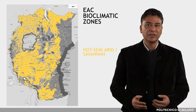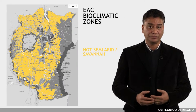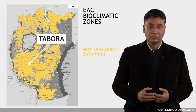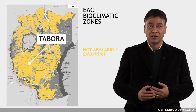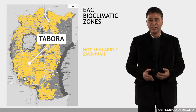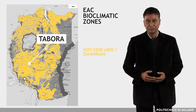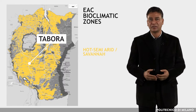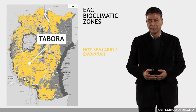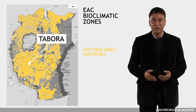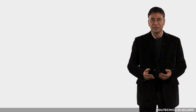The third zone is Hot Semi-Arid. The representative location is Tabora in Tanzania. This zone covers the widest area of EAC, including some parts of Kenya and large parts of Tanzania and Uganda, with altitude ranging from 500 to 1500 meters.